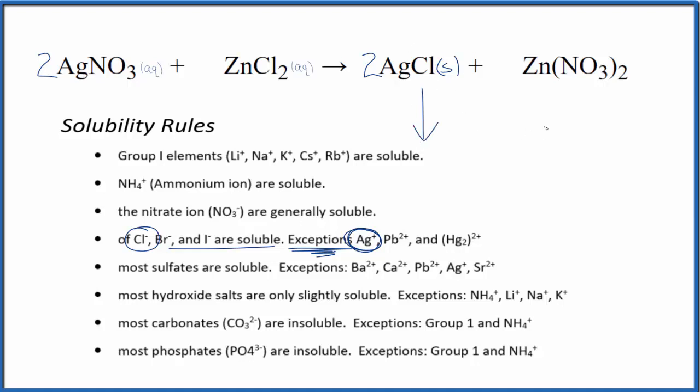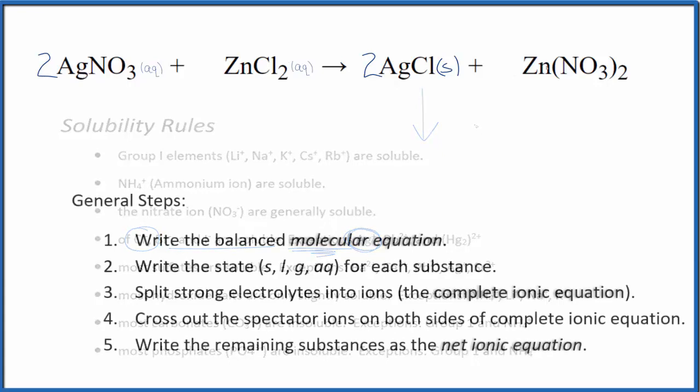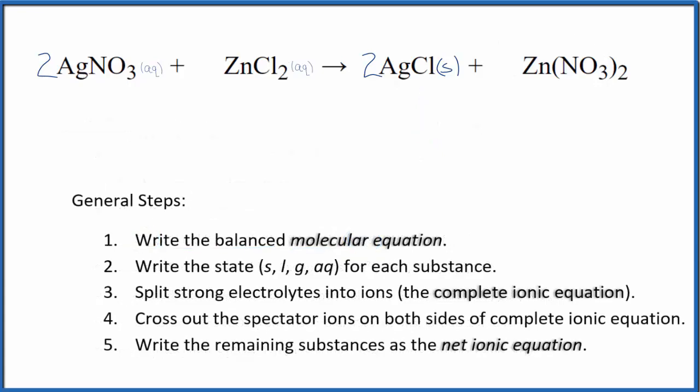So the AgCl, that's our precipitate in this reaction. And then we have zinc nitrate, and that is going to be aqueous because we have that nitrate, which is very soluble. So we have the states. Now we can split the strong electrolytes into ions, and that's going to give us the complete ionic equation.